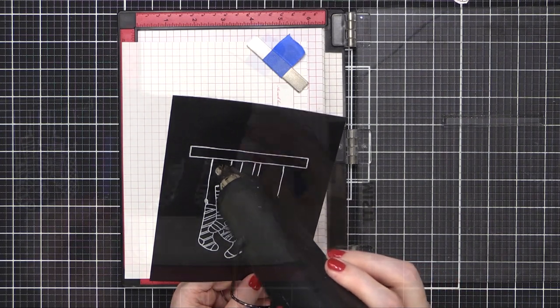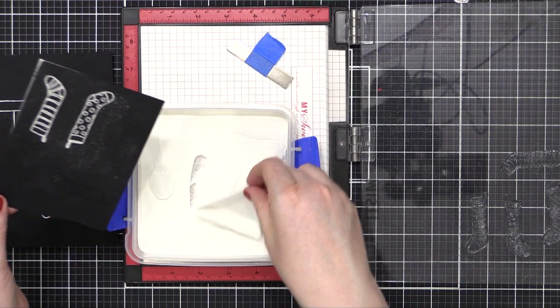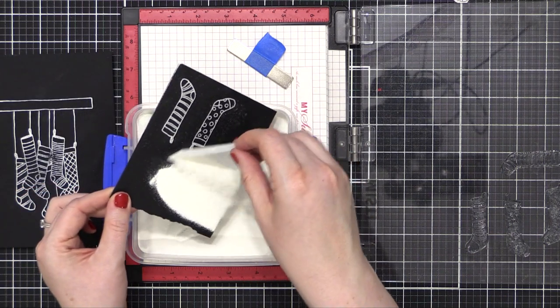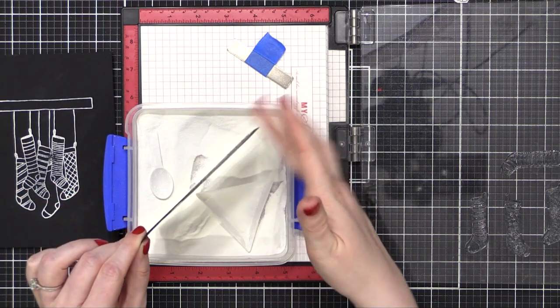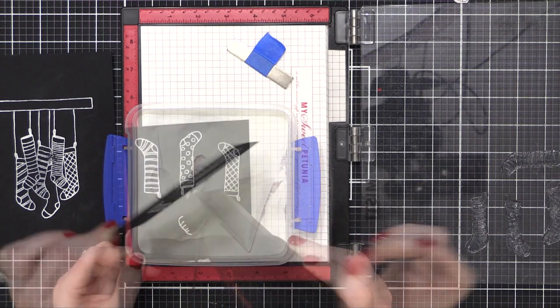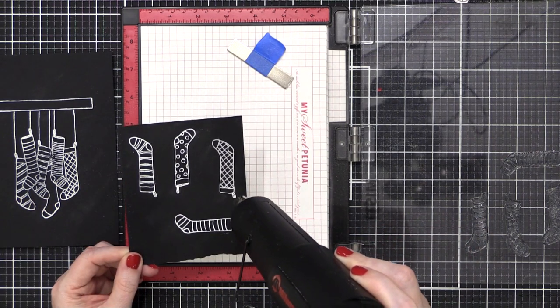I'm also going to be stamping the individual stockings from the stamp set. I wasn't sure which stockings I would use. I ended up actually only using two of the four that I stamped, but I did stamp four at the beginning here before I knew what was going to be going on my card.